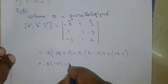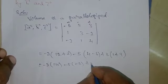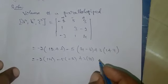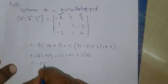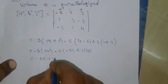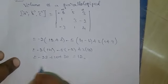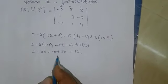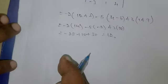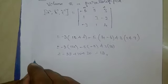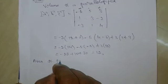Continuing: minus 5 into (4 - 2 + 2) plus 3 into (plus 3). We get the value: -28 plus 10 plus 30, which gives us 12. So the volume equals 12.